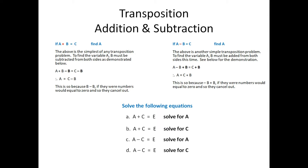a plus b minus b is equal to c minus b. These two will cancel out, leaving a equal to c minus b.